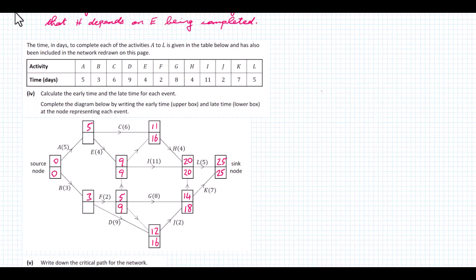Moving to this one here: 16 minus 9 is 7, and 9 minus 2 is also 7 — so we put 7 there. Up here we have 16 minus 6 which is 10, and 9 minus 4 which is 5 — pick the lower one, 5. So we put 5 there, and that brings us back to the start. That's the diagram finished.